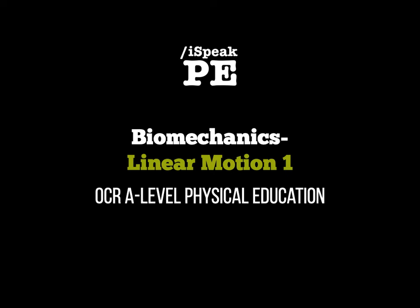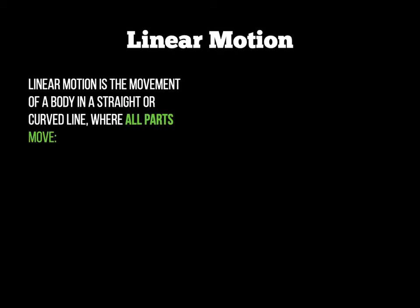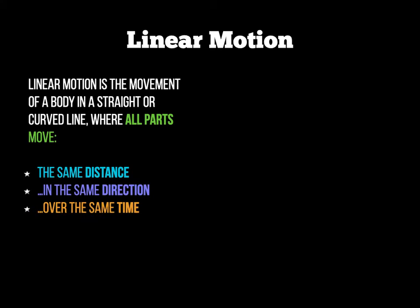Welcome to another screencast on biomechanics. This time we're discussing linear motion and its definitions. Linear motion, if you're defining this for an exam question, is the movement of a body — a person or an object — in a straight or curved line where all parts move the same distance, in the same direction, over the same time. Remember, for exams you need all three elements, otherwise you will not gain any marks.